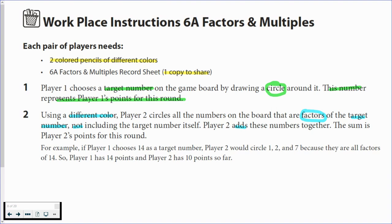Here's the instructions. Player one chooses a target number on the game board and circles it. This is the number that represents player one's points for this round. Then player two uses a different color and circles all the factors of that target number, not including the target number itself though. And then player two adds those together and that's his or her sum.